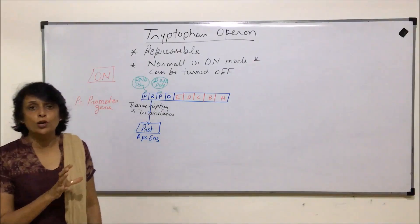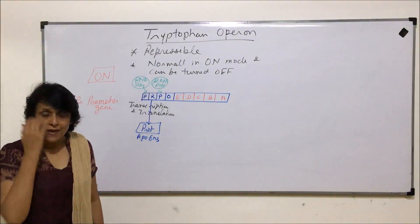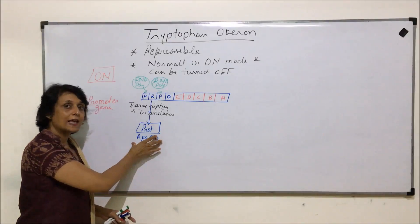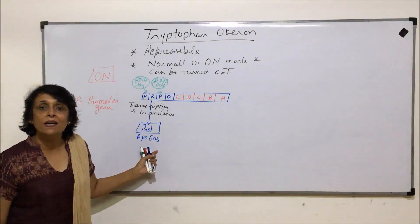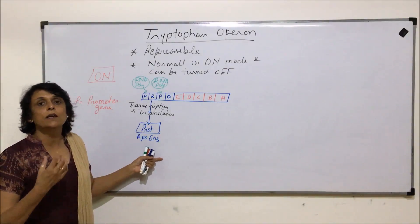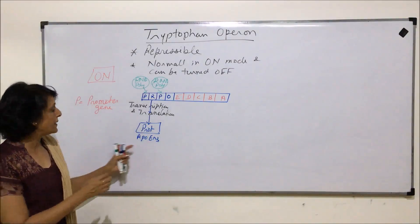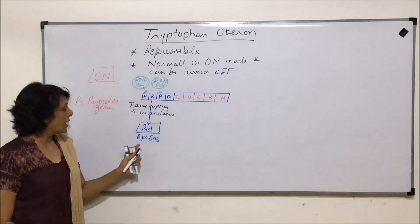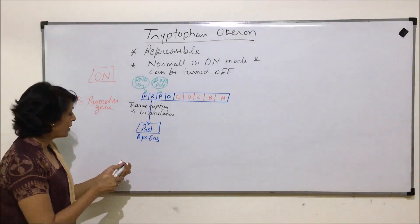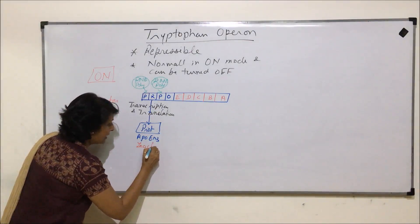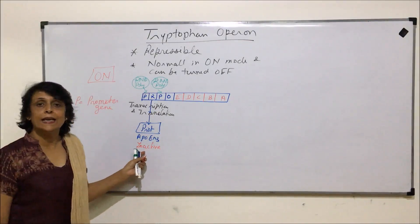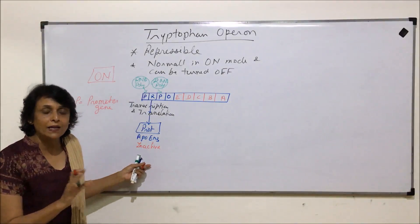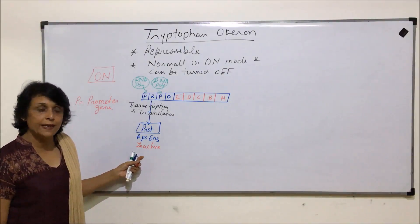Transcription and translation result in the formation of a protein, and this protein acts as an apoenzyme. When we talk of enzymes, the whole enzyme molecule is called the holoenzyme, which is made up of a protein part called the apoenzyme and a non-protein part such as a prosthetic group, coenzyme, or cofactor. So the apoenzyme is inactive on its own — it is just synthesized and remains there, not binding or reacting with anything.